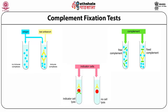In the final step, indicator cells — that is the red cells or RBCs — together with sub-agglutinating amount of antibody are added to the mixture. If there is any complement remaining, these cells will be lysed. If it was consumed by the immune complexes, they will be insufficient to lyse the red cells. A quantity of complement is used which is just enough to lyse the indicator cells if none is consumed by the complexes. The assay is often performed on plastic plates. By using constant amount of antibody and titrations of the antigen, the assay can be applied for testing antigens.